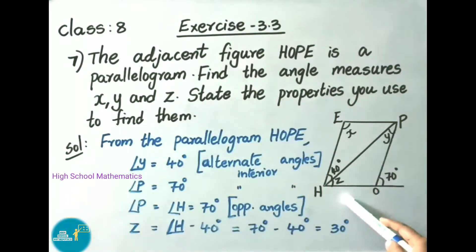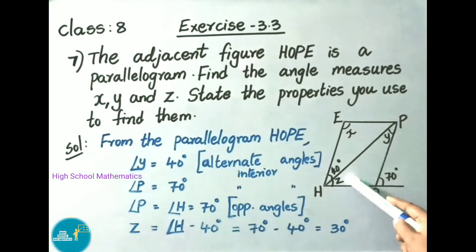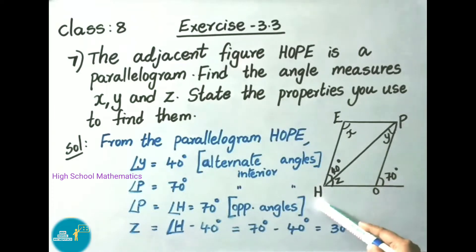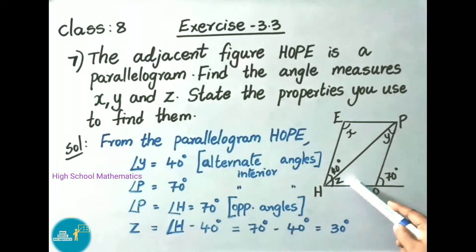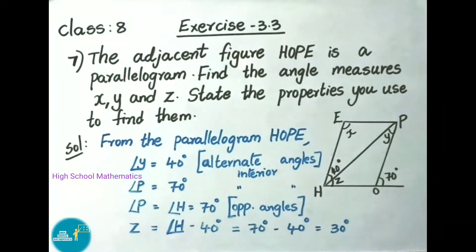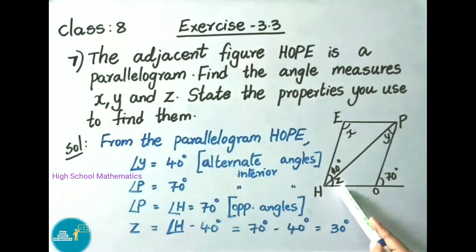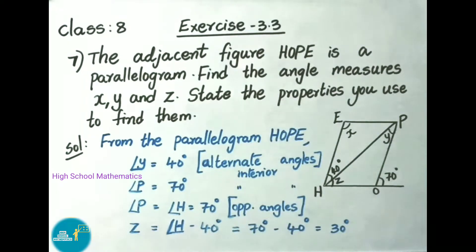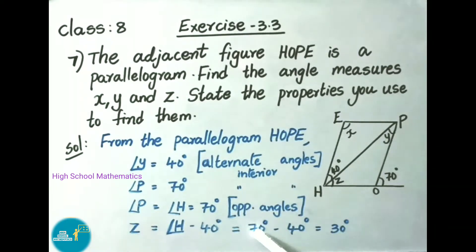Next, observe here: z plus 40 degrees equals angle H. We need to find z. We know H is 70 degrees and we know 40 degrees. So z equals angle H minus 40 degrees, that equals 70 minus 40, which is 30 degrees.